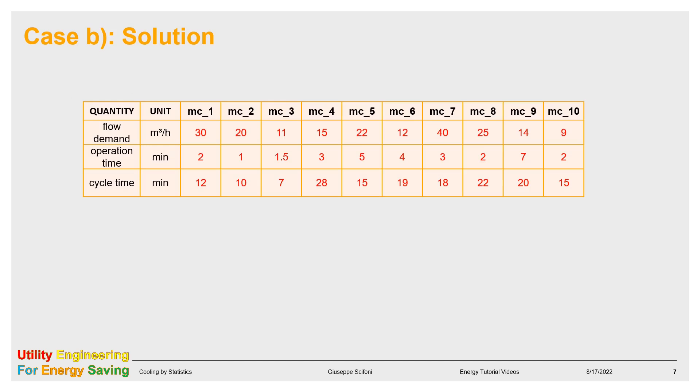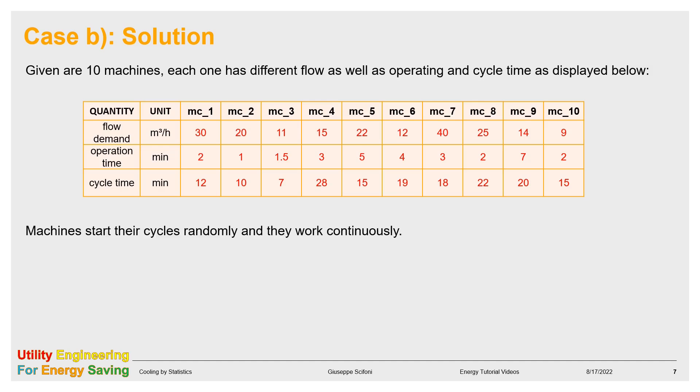In the second example, the machines are different. That means the flow demand, as well as the operating and cycle times, are different. This is the most general case. The relevant data are displayed in the table. Also in this case, we want to find the overall flow capital Q under a reliability of 98%. Since for such a configuration, we don't have any formula at disposal from the statistics, we need to run a simulation. We will adopt the Monte Carlo method.